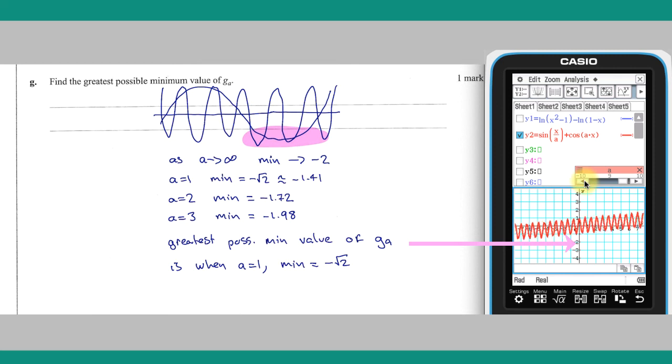As this shows, the minimum value of g_a is close to minus 2 for large values of a, but increases as a decreases. This confirms the calculations done previously.